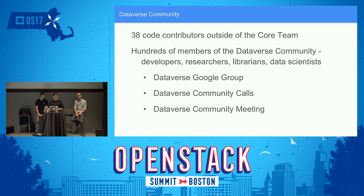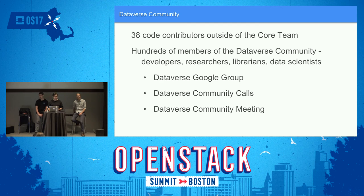Besides having a community using the software, we also have a lot of code contributions from outside our core team — up to now about 38 code contributors. We have hundreds of community members: developers, researchers, librarians, and data scientists, and several communication channels. There's a Dataverse Google Group mailing list that's active — when we first started the list we usually were the ones to respond, but as the community has grown, other members often answer before we even get to it.